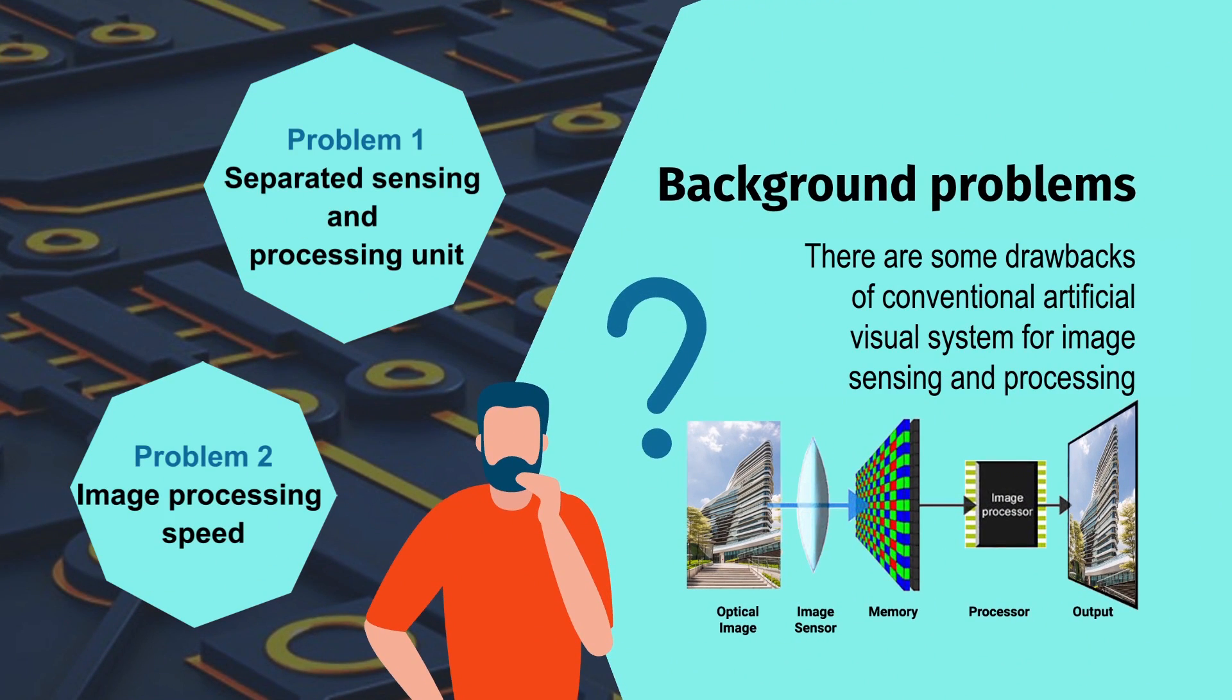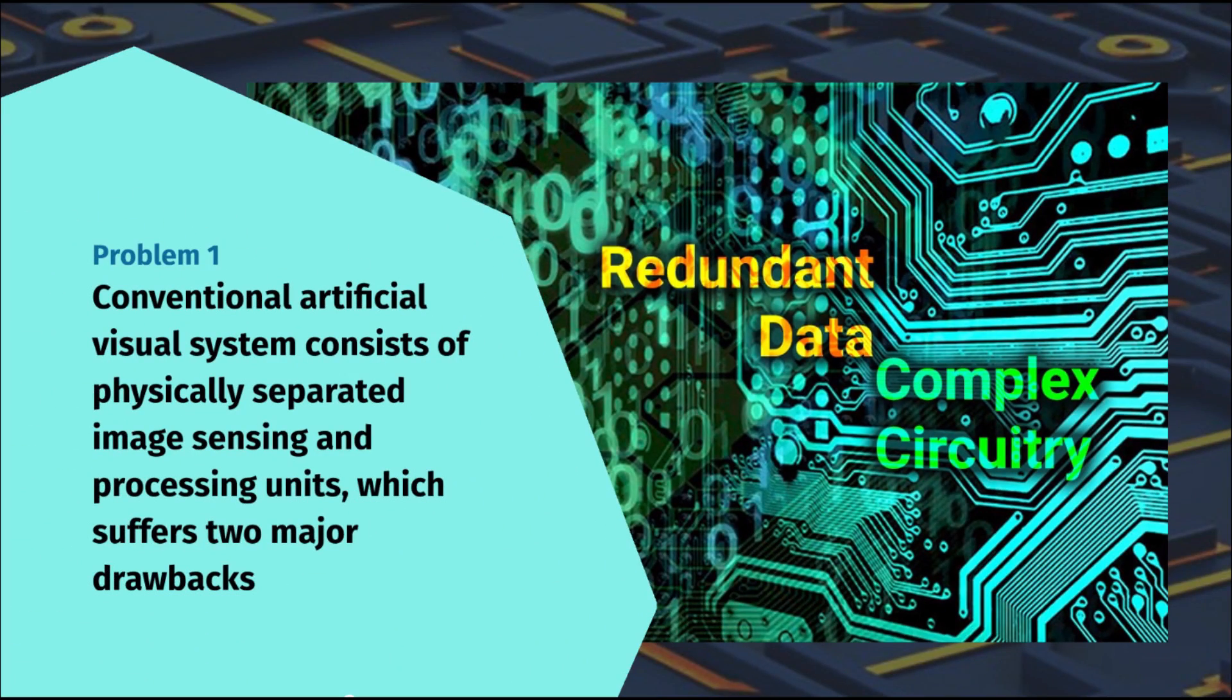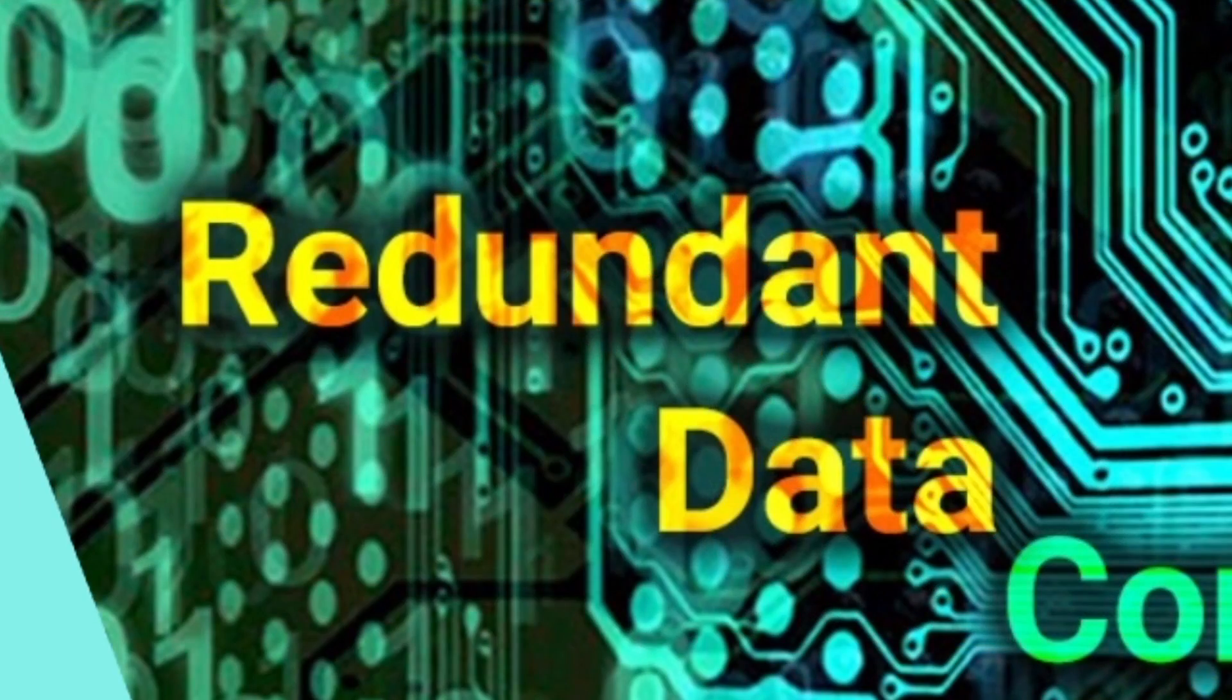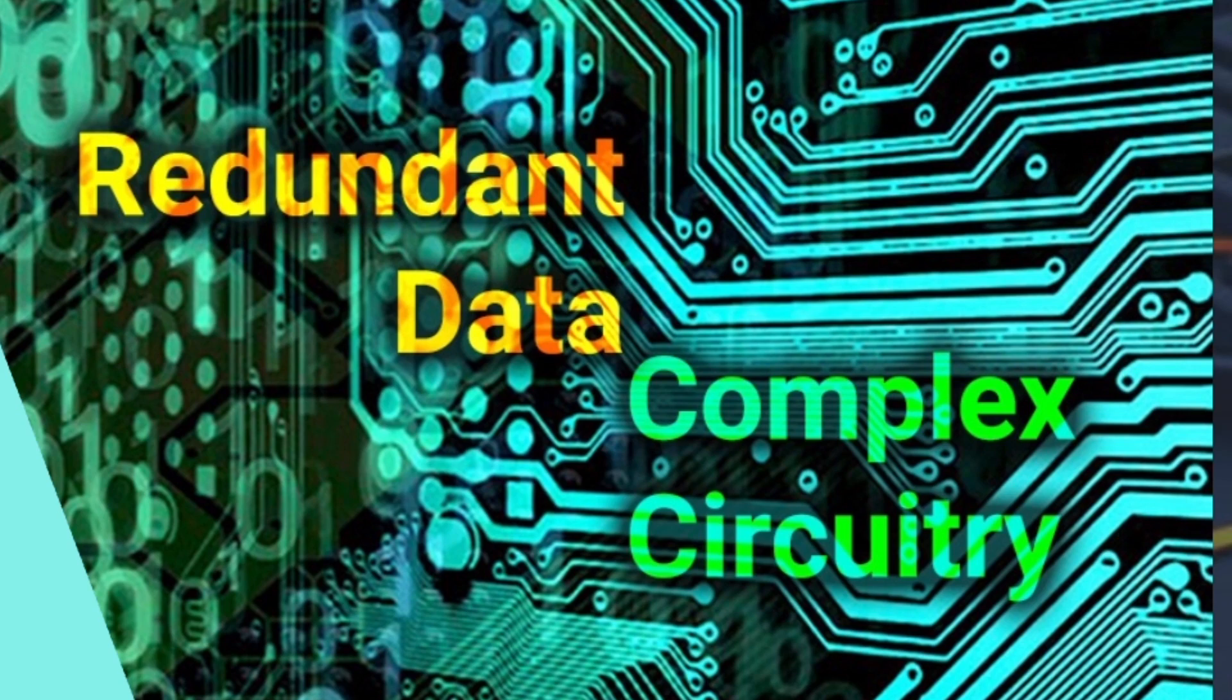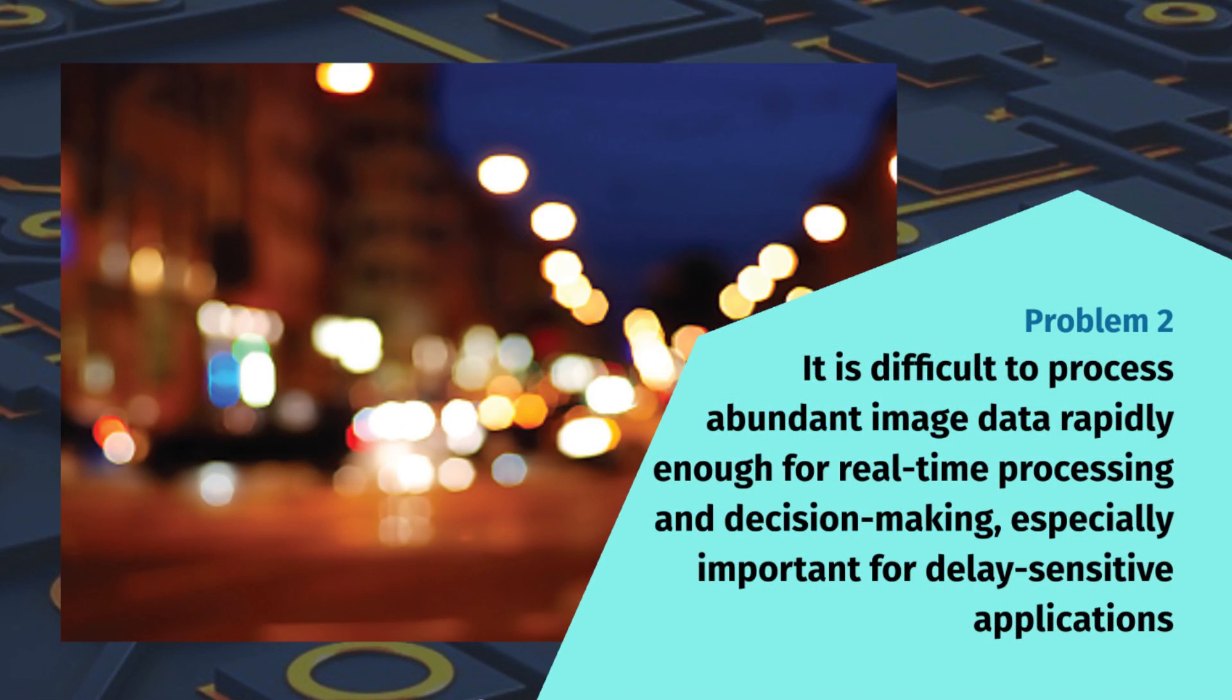Problem 1: Conventional artificial visual systems consist of physically separated image sensing and processing units, which suffers two major drawbacks - redundant data and complex circuitry.